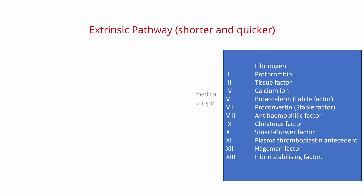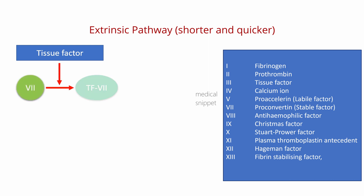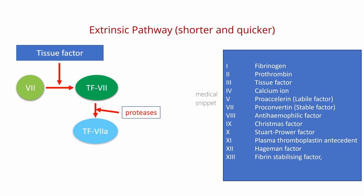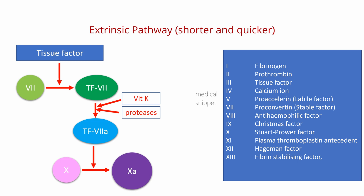Let's now concentrate on the shorter extrinsic pathway. When external injury occurs, the tissue factor, that is factor III, is released. Factor VII and tissue factor form a complex called TF7. Once factor VII is bound to its cofactor, that is tissue factor, it gets activated by various proteases to form the TF7a complex. Vitamin K is required for the activation of factor VII. This complex in turn activates factor X to factor Xa. This is the point where both extrinsic and intrinsic pathways merge into the common pathway. The extrinsic pathway is clinically measured as the prothrombin time.